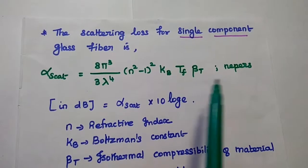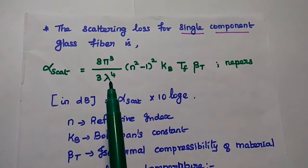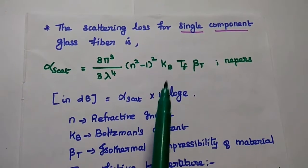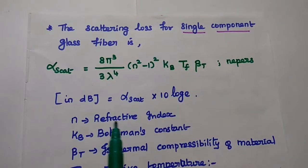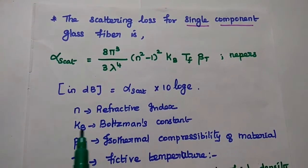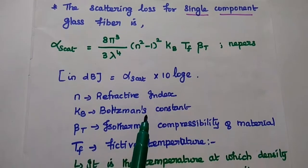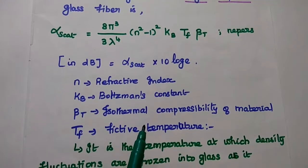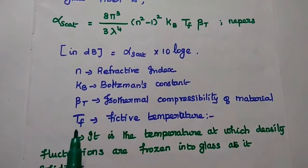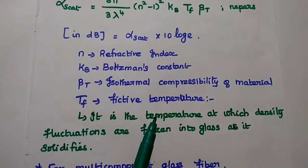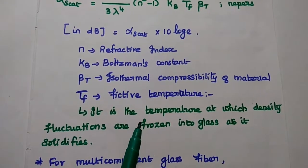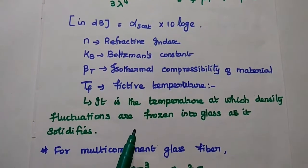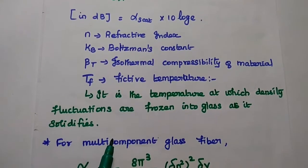The unit is Nepers. In terms of dB, we multiply this value by 10 log e. Here, n is the refractive index, k_B is the Boltzmann constant, β_T is the isothermal compressibility of the material, and T_f is the fictive temperature — the temperature at which the density fluctuations are frozen into the glass as it solidifies.